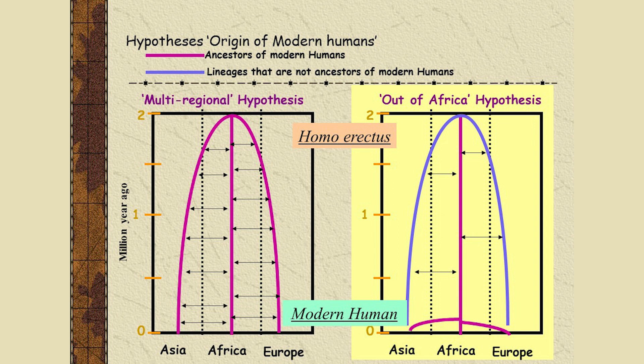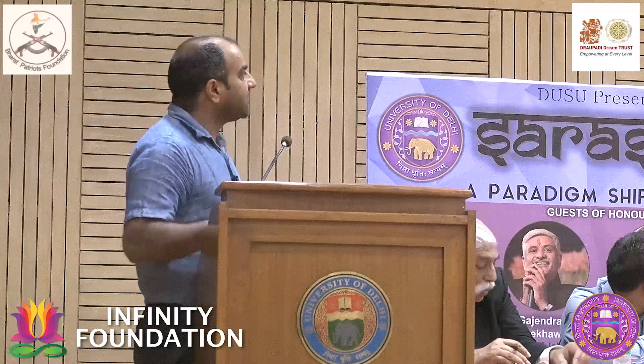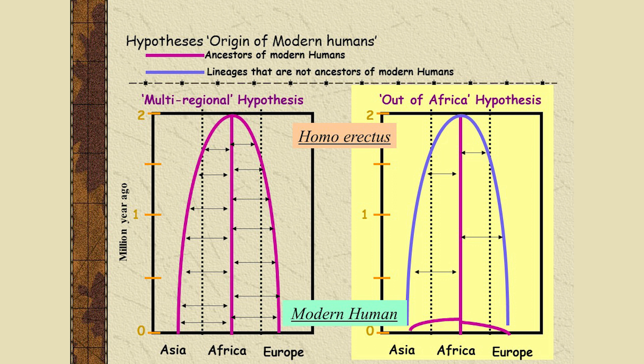From a genetics perspective, there are two hypotheses: the multi-regional hypothesis and the out-of-Africa hypothesis. The purple line represents other ancestral human lineages, and the blue lines represent other hominids. The multi-regional hypothesis says all different ancestral hominids — other human-like species — had common ancestors in Africa, migrated to different regions, but with overlap and exchange of genetic material.